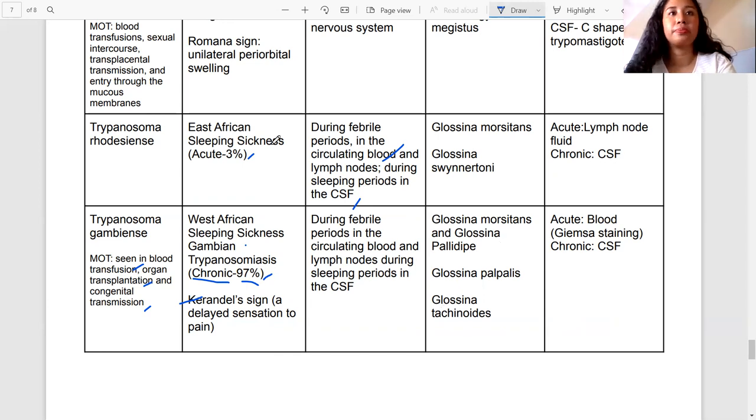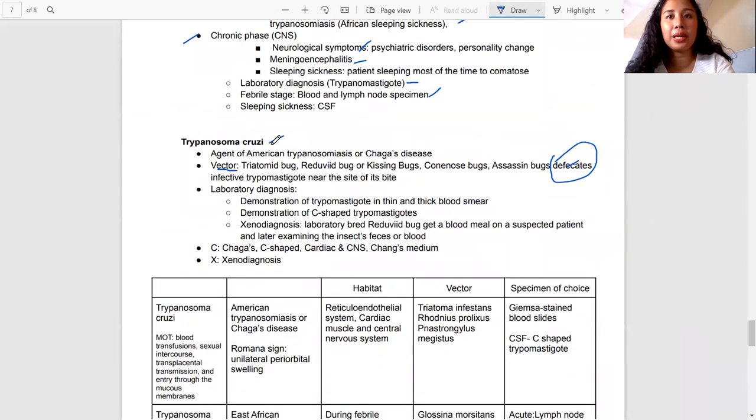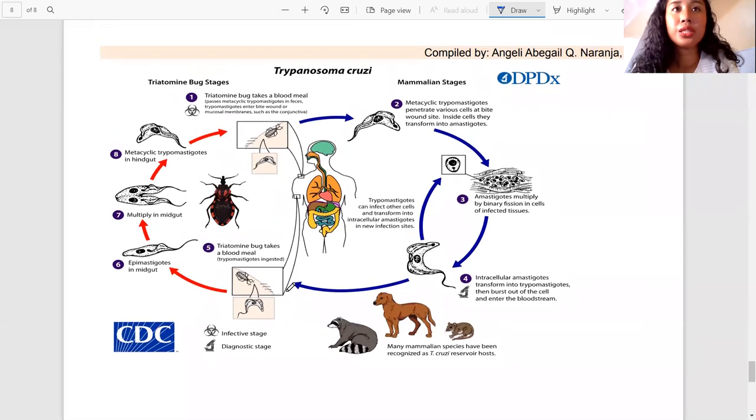For gambiense, we have Kerandel sign, delayed sensation of pain. Since trypanosoma rhodesiense is more acute, it's more in circulating blood and lymph node. But if it would turn chronic, it's in the CSF. Same for both. Giemsa staining. American, African sleeping sickness. Next is another important trypanosoma, which is cruzi. This is American trypanosomiasis, but it's not in the US, it's in Central America. It causes American trypanosomiasis or Chagas disease.